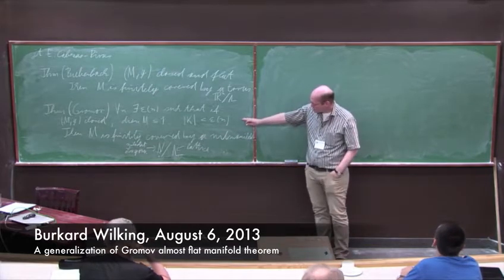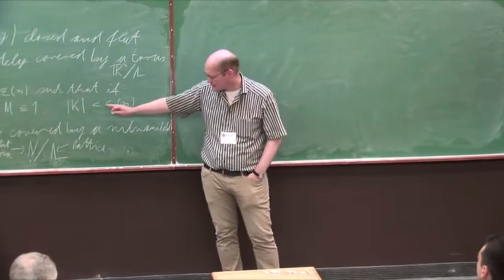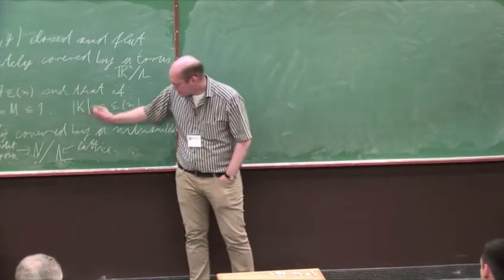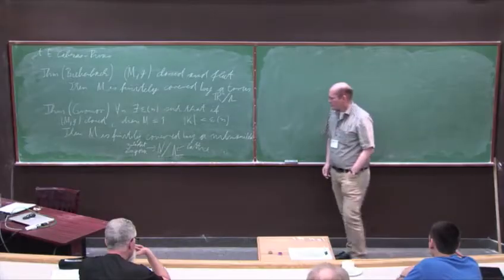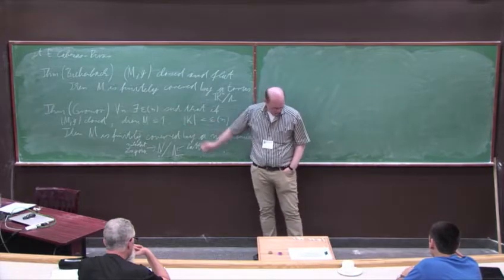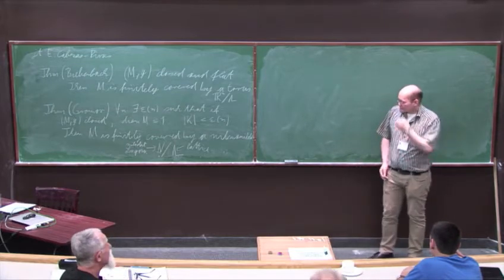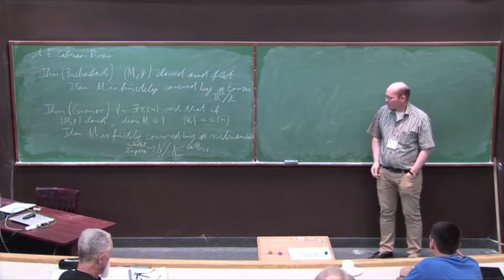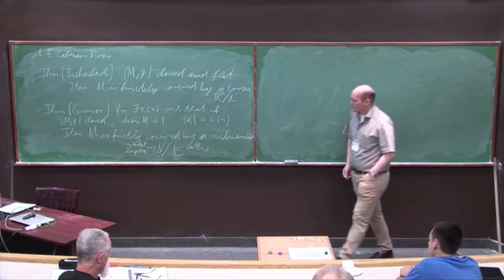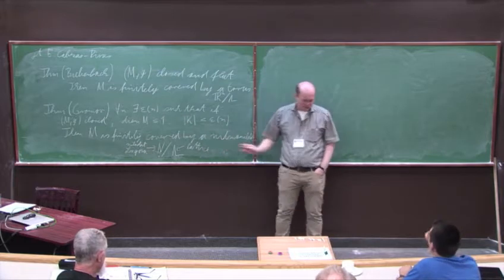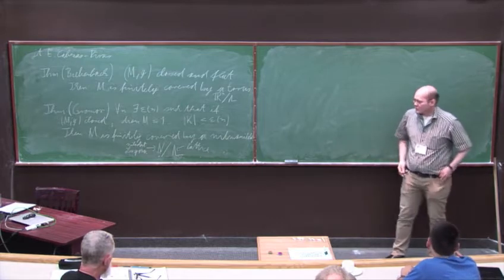What we want to generalize is sort of the curvature assumption. There have been previous generalizations by Peterson, Day, and Vey, where you actually assume instead of an L-infinity bound, an LP bound of the curvature where P is more than N over 2, which is the critical value. But that's not quite what we are interested in. We want kind of an L1 bound, but at the same time we allow ourselves a uniform lower curvature bound.